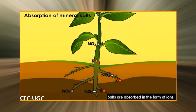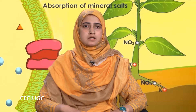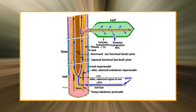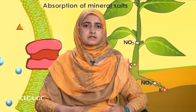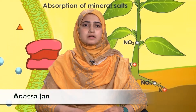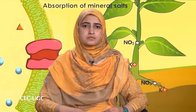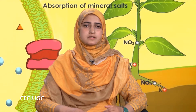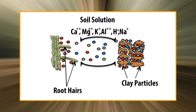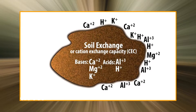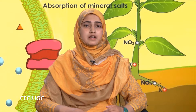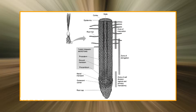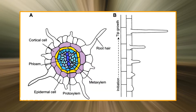Previously, it was thought that the absorption of mineral salts from the soil took place along with the absorption of water, but it is now well established that mineral salt absorption and water absorption are two different processes. Mineral salts are absorbed from the soil solution in the form of ions, and they are chiefly absorbed through the meristematic regions of the roots near the tips.